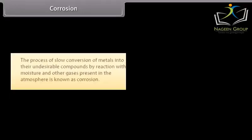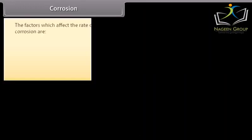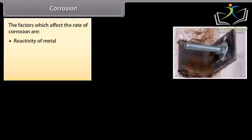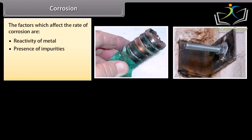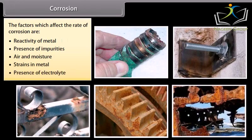Corrosion. The process of slow conversion of metals into their undesirable compounds by reaction with moisture and other gases present in the atmosphere is known as corrosion. For example, silver gets tarnished, iron rusts, copper develops green coating on its surface, and lead loses its luster. The factors which affect the rate of corrosion are: reactivity of metal, presence of impurities, air and moisture, strains in metal, and presence of electrolyte.